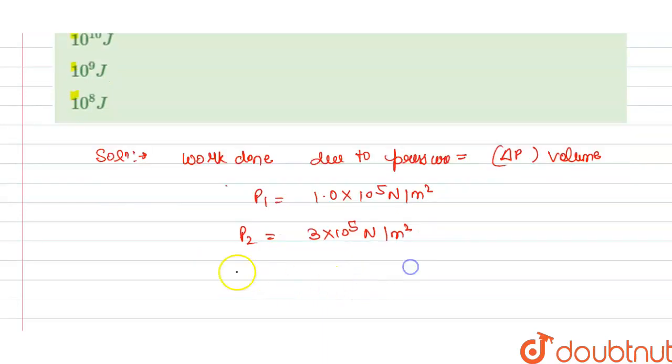So this is 3×10^5 minus 1×10^5, which equals 2×10^5 N/m².